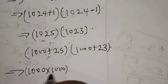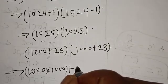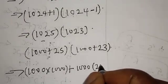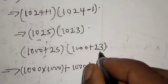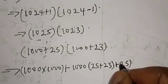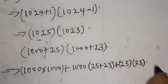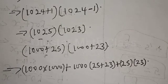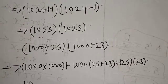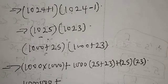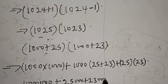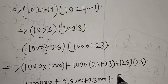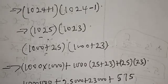Now this implies we have 1000 multiplied by 1000, then 1000 multiplied by 25, then plus 23, then plus 25 multiplied by 23. Opening the bracket: 1000 times 1000 is 1 million, then 1000 times 25 is 25 thousand, 1000 times 23 is 23 thousand, and 25 times 23 is 575.